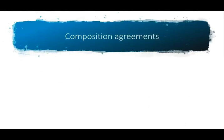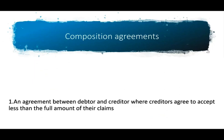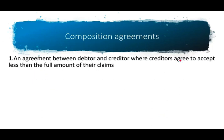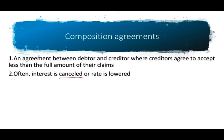Another option is a composition agreement — an agreement between the debtor and the creditor where the creditor agrees to accept less than the full amount of their claim. For example, if you owe $300,000, the creditor might say pay me $180,000 and we'll call it even. Alternatively, they may cancel the interest and say just pay the principal, or they can lower the interest rate — for instance, from 8% down to 4%.